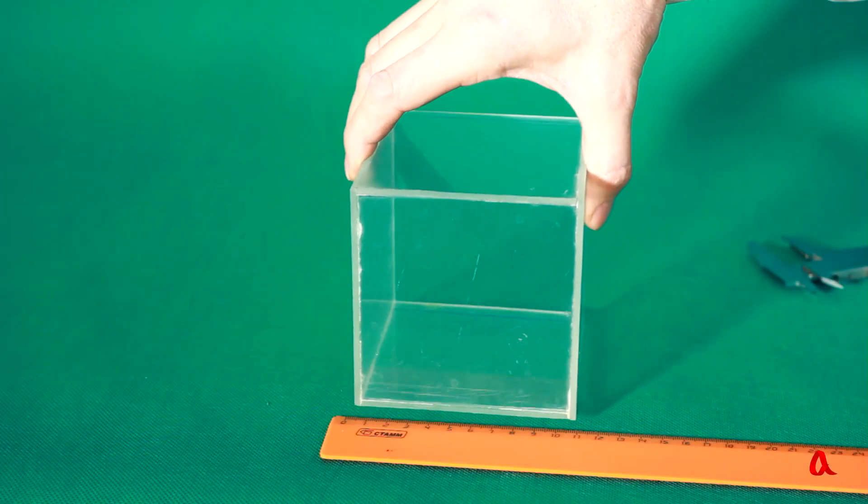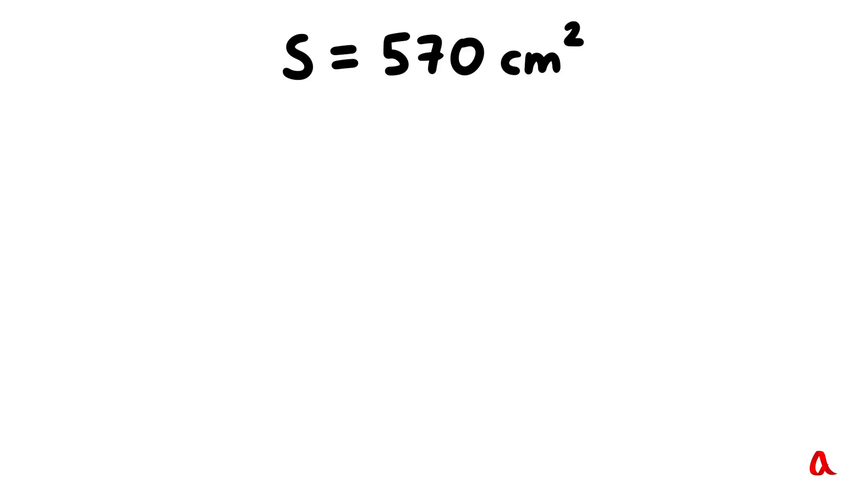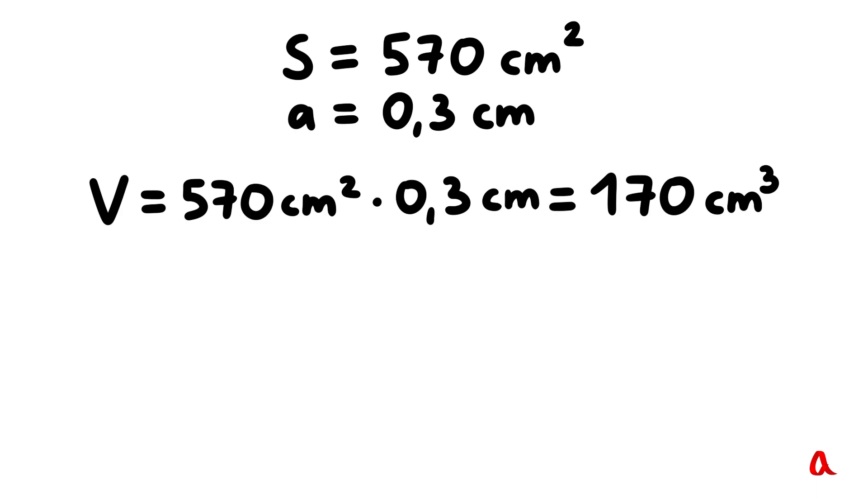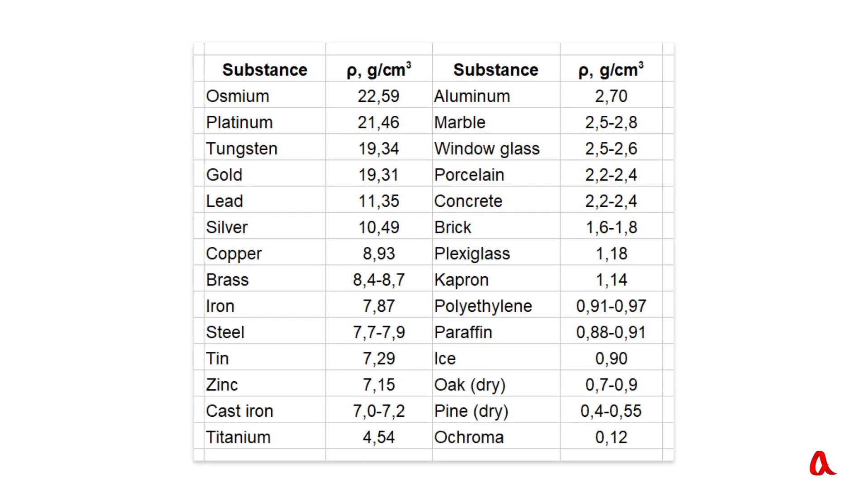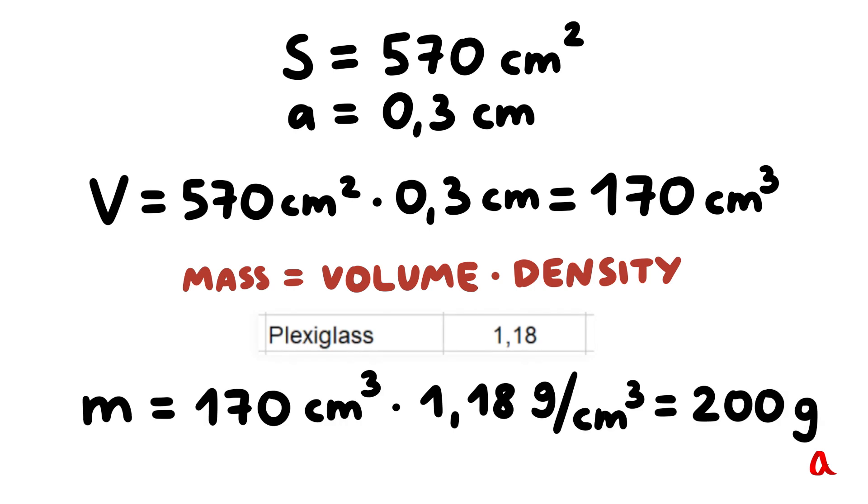Let us find out the mass of this container using this method and then check the result through direct weighing. The overall area of the plates the container is made up of equals 570 square centimeters. The width of its wall is 0.3 centimeter. So the overall area of the plexiglass is 570 multiplied by 0.3, which makes 170 cubic centimeters. We look up the density of plexiglass in the chart. It is 1.18 gram per cubic centimeter. Let us calculate the mass. 170 multiplied by 1.18 is 200 grams.